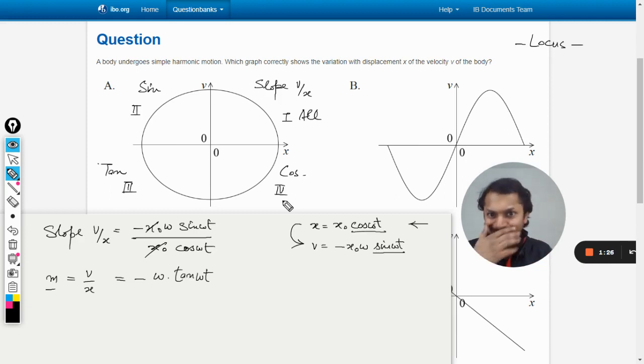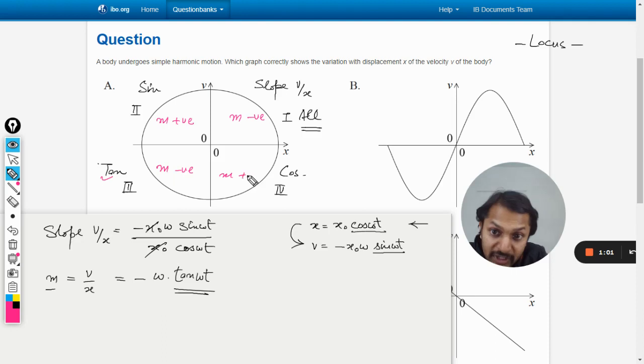Accordingly, in the first quadrant the tangent is positive, so if this is positive the slope is negative. In the second quadrant tan is negative so the slope will become positive. Here the tan is positive, the slope becomes negative. And here the tan becomes negative again, so slope becomes positive.